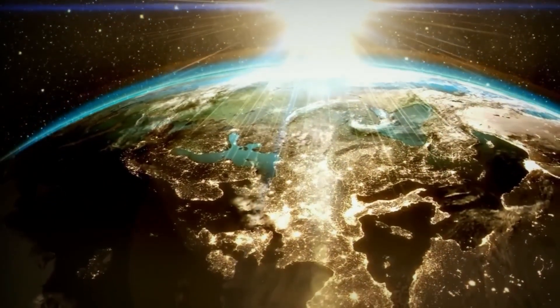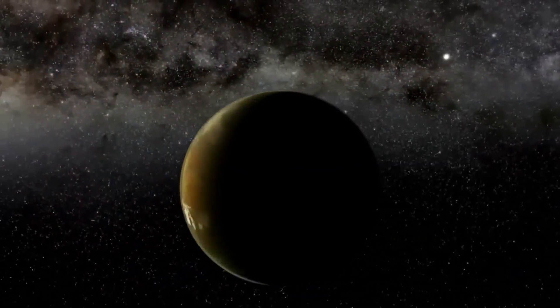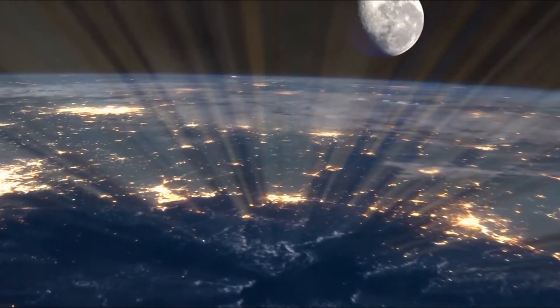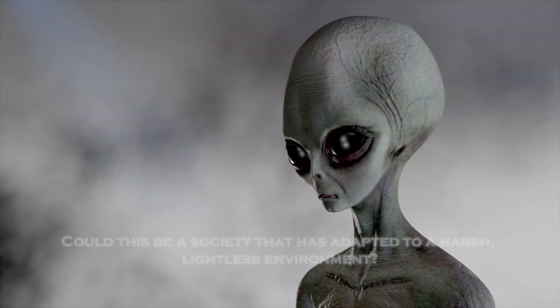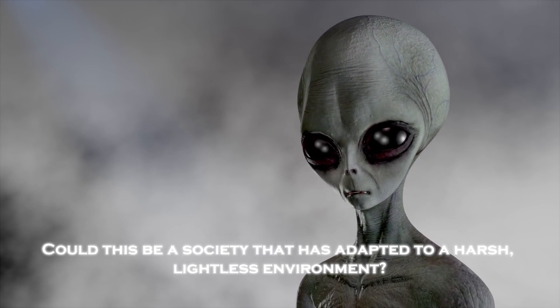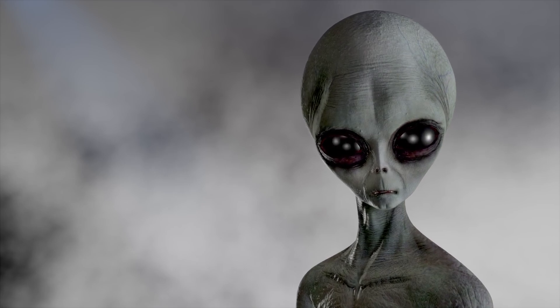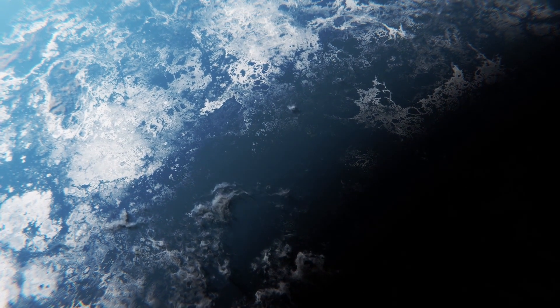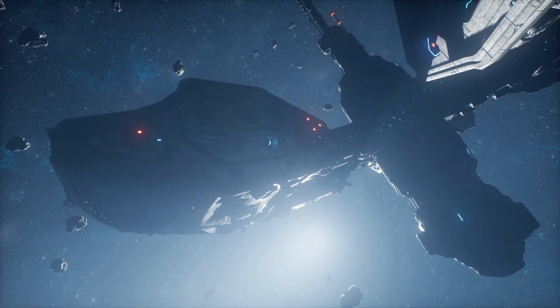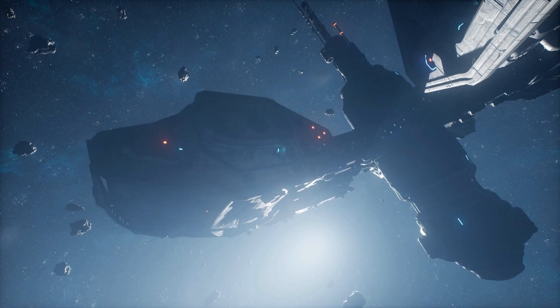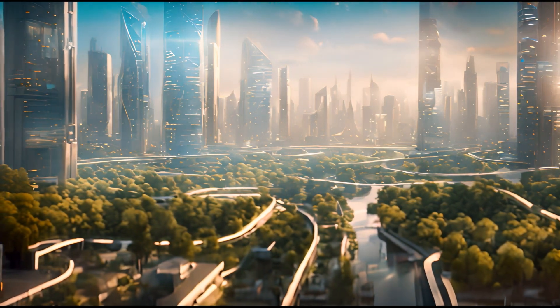Advanced technology could provide light and heat, overcoming challenges of eternal darkness. The patterns of these emissions resemble urban lighting, suggesting organized activity. Could this be a society that has adapted to a harsh and lightless environment, thriving in ways we cannot yet comprehend? The implications are staggering. If life exists here, it may have developed technologies far beyond our imagination, harnessing resources to survive in one of the most extreme environments in the galaxy.